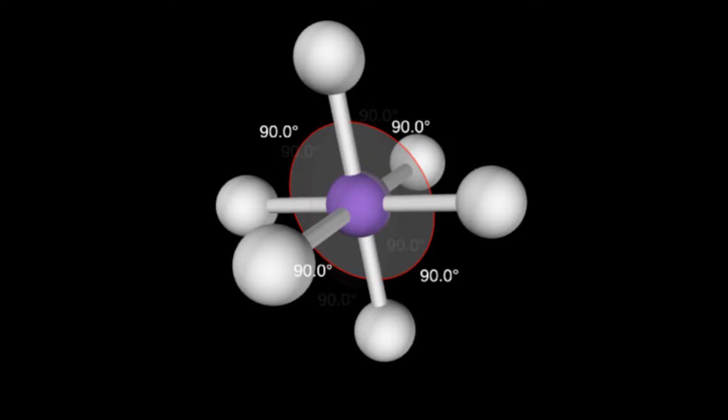As the bonded atoms are arranged symmetrically around the central atom, the dipoles will cancel out if all atoms bonded to the central atom are the same. Therefore the molecule will be non-polar if the atoms bonded to the central atom are the same, but polar if there are different atoms bonded to the central atom.